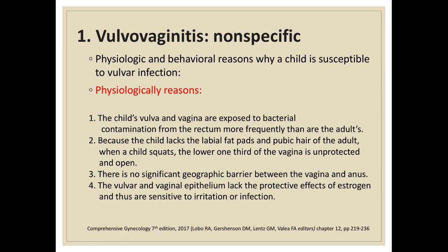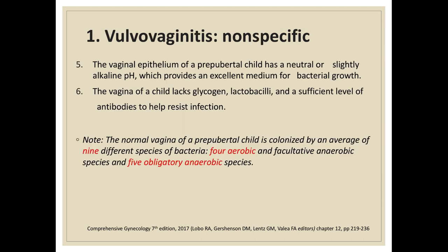There are physiologic and behavioral reasons why a child is susceptible to nonspecific vulvovaginitis. Physiologic reasons include: the child's vulva and vagina are exposed to bacterial contamination from the rectum more frequently; the child lacks labial fat pads and pubic hair, so the lower third of the vagina is unprotected when squatting; there is no significant geographic barrier between the vagina and the anus; the vulvar and vaginal epithelium lack the protective effects of estrogen; the vaginal pH is neutral or slightly alkaline, providing an excellent medium for bacterial growth; and the vagina lacks glycogen, lactobacilli, and sufficient antibodies to resist infection. The normal vagina of a pre-pubertal child is colonized by an average of nine different species of bacteria.